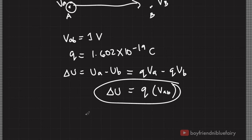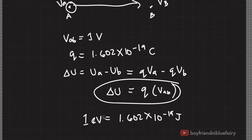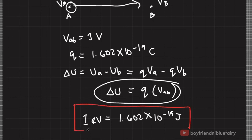One electron volt is equal to 1.602 times 10 to the negative 19 joules. Essentially, one electron volt is the energy required to move an electron from point A to point B. This energy unit is important because many particles and their movements are described in terms of electron volts. The kinetic or potential energy of particles are commonly described in millielectron volts, kiloelectron volts, megaelectron volts, gigaelectron volts, teraelectron volts, and so on.